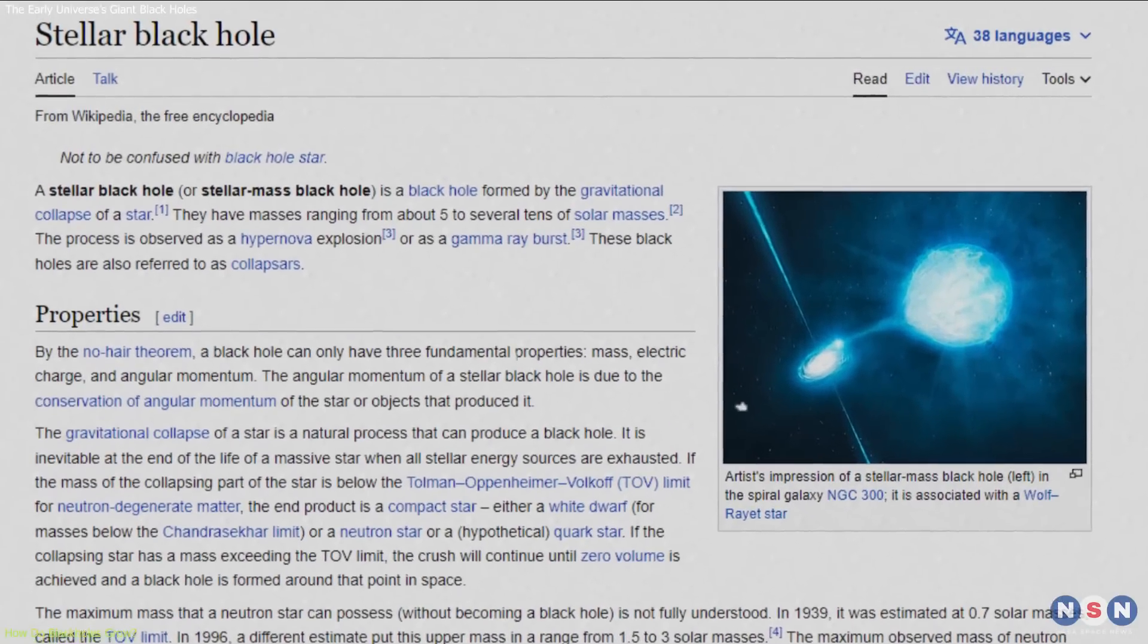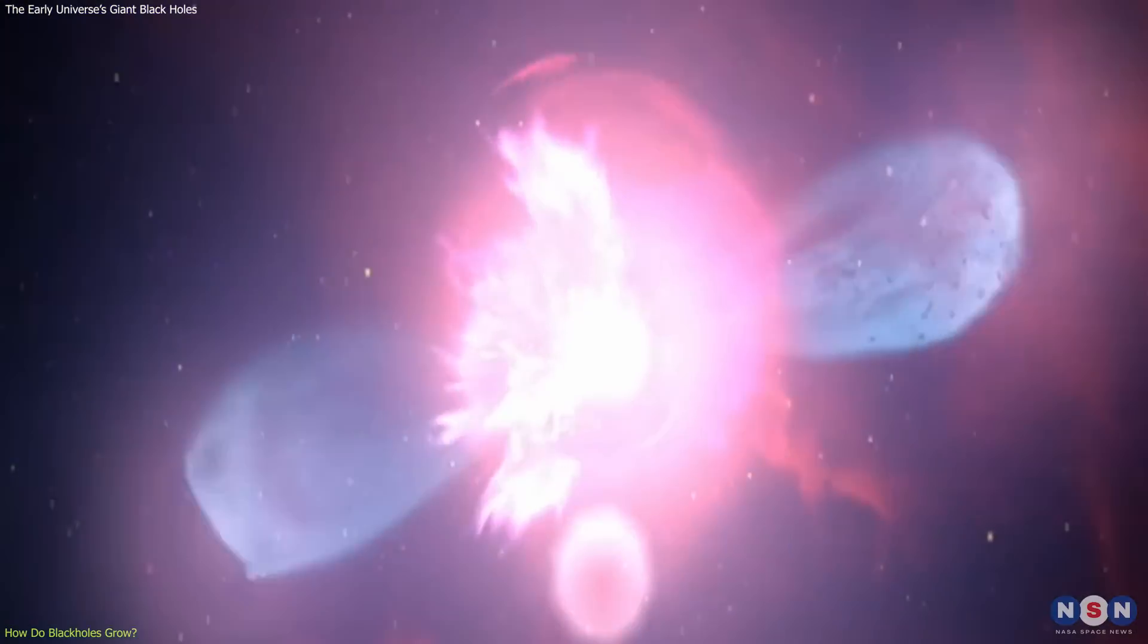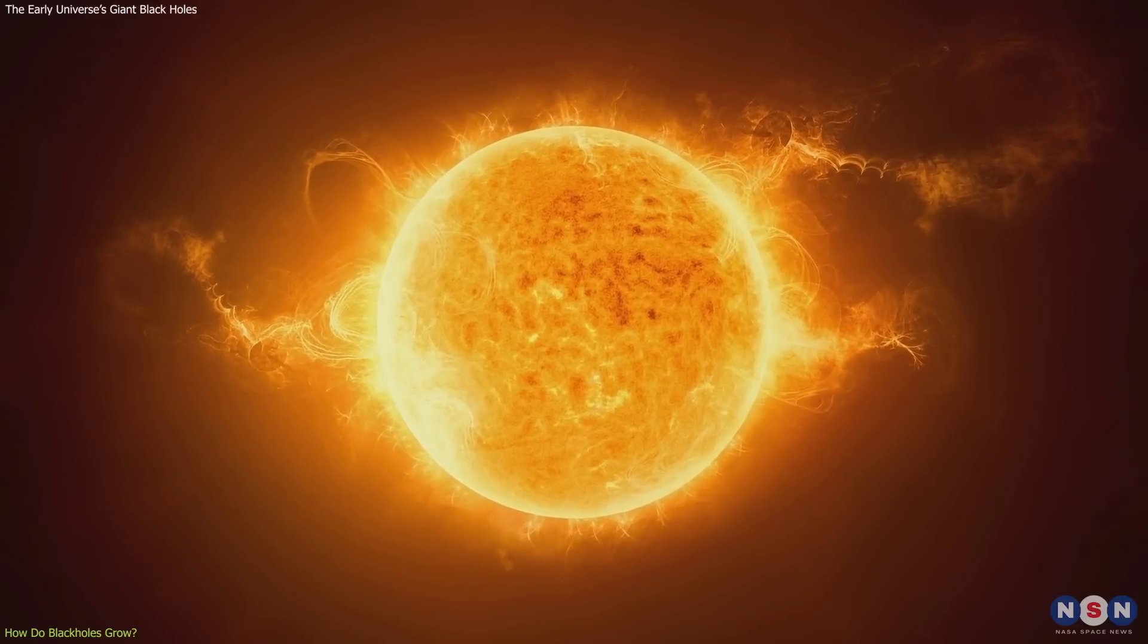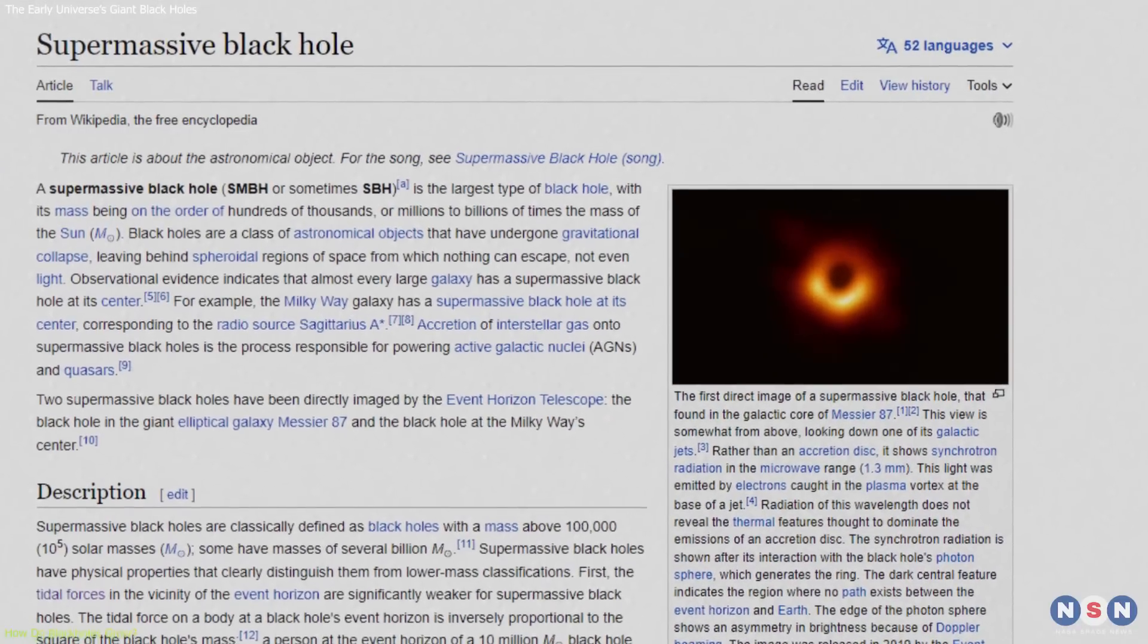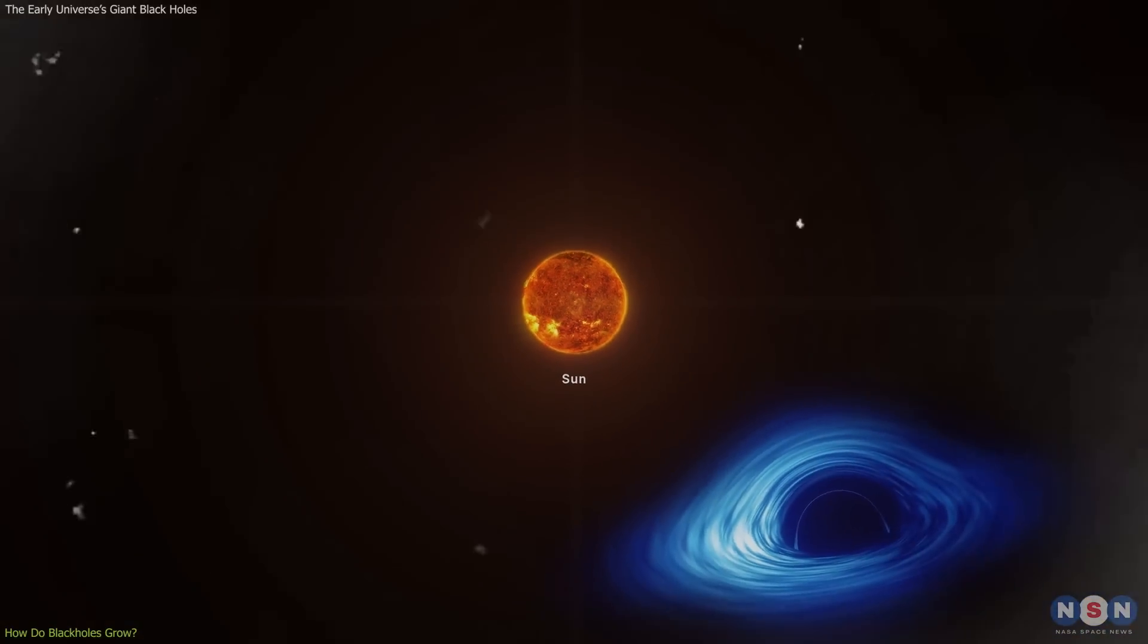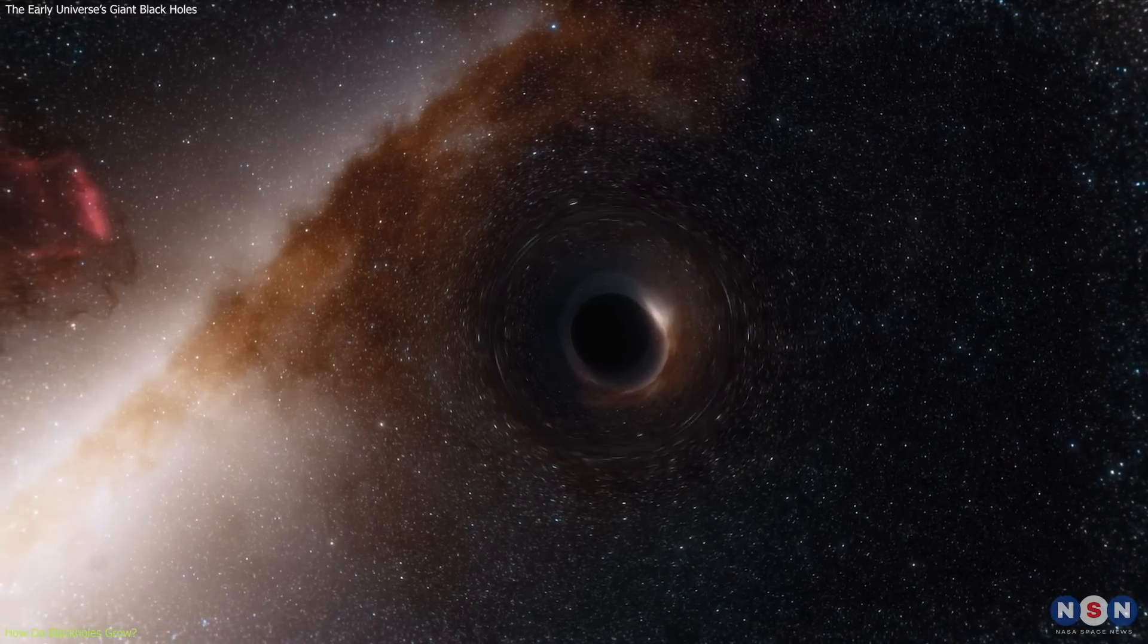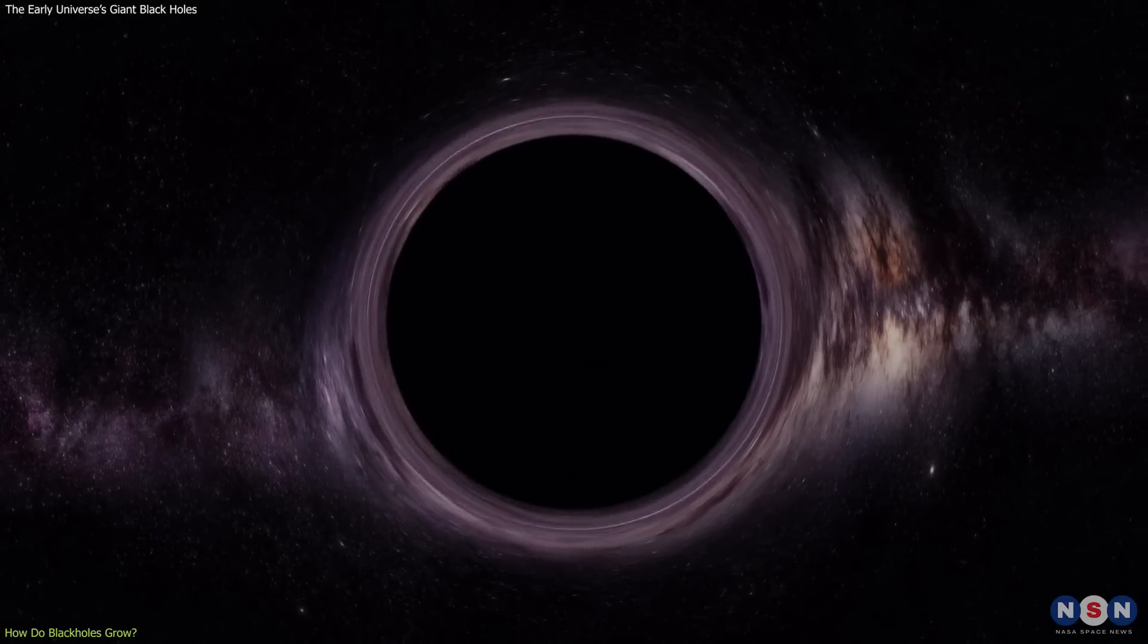There are different types of black holes, depending on their mass and origin. The smallest ones are called stellar mass black holes, which form when massive stars run out of fuel and collapse under their own gravity. They typically have masses between 5 and 100 times that of our sun. The largest ones are called supermassive black holes, which have masses between millions and billions of times that of our sun. They are found in the centers of most galaxies, including our own Milky Way.